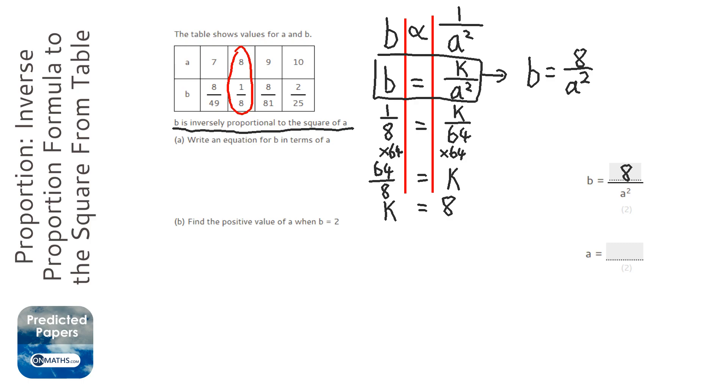Okay, I'm going to use that to find out what a is when b is 2. So I'm going to write the same thing as I've written down for my answer here, but instead of b I'm just going to write 2. So 2 equals 8 over a squared. Get my lines down.